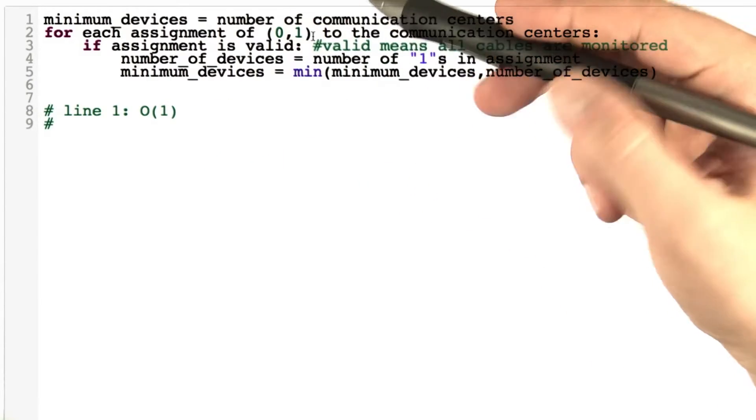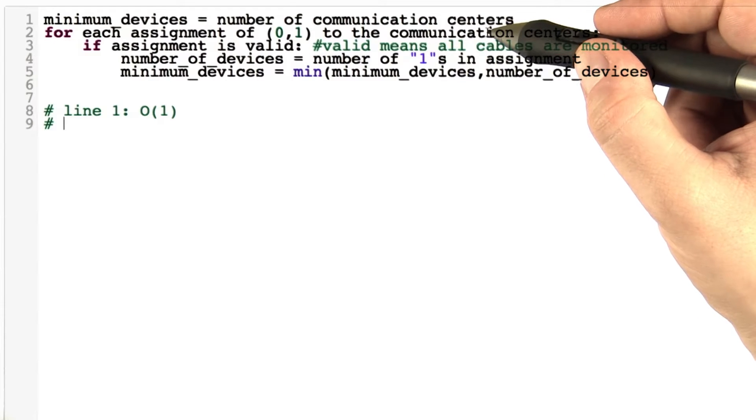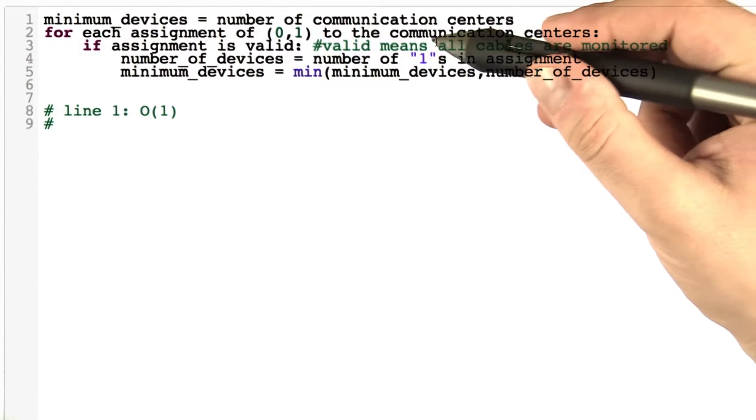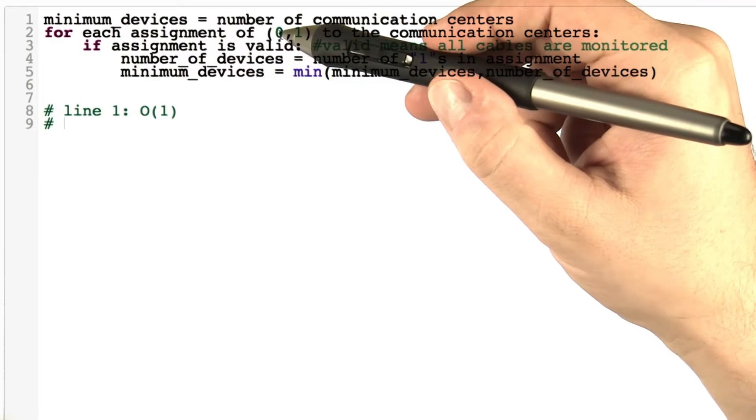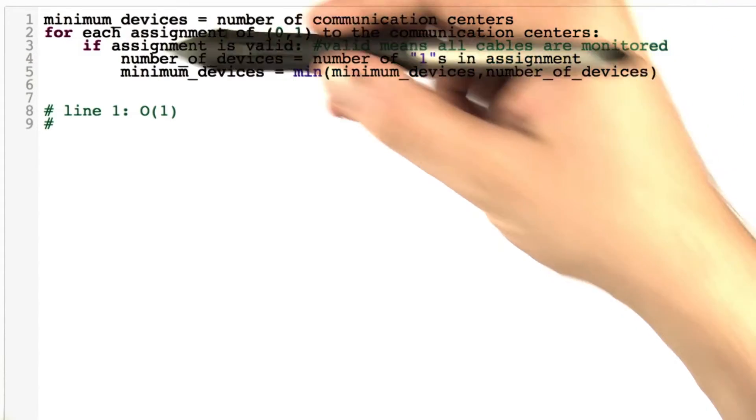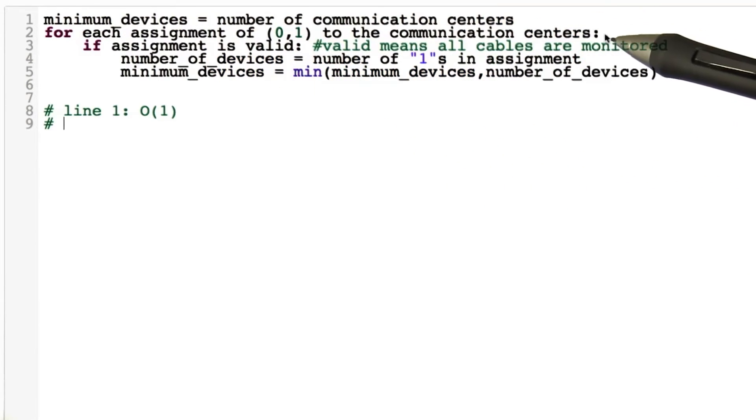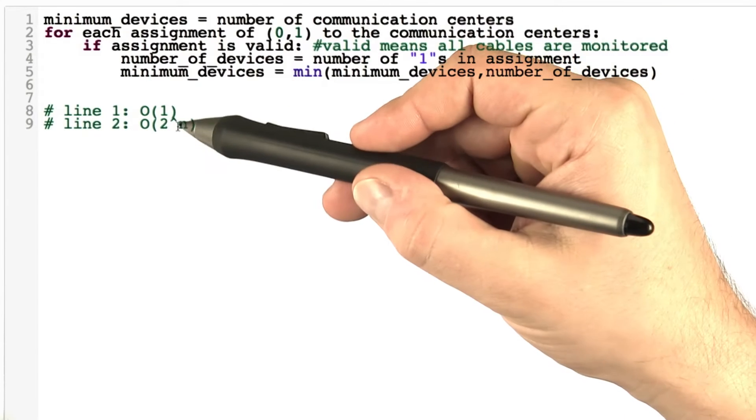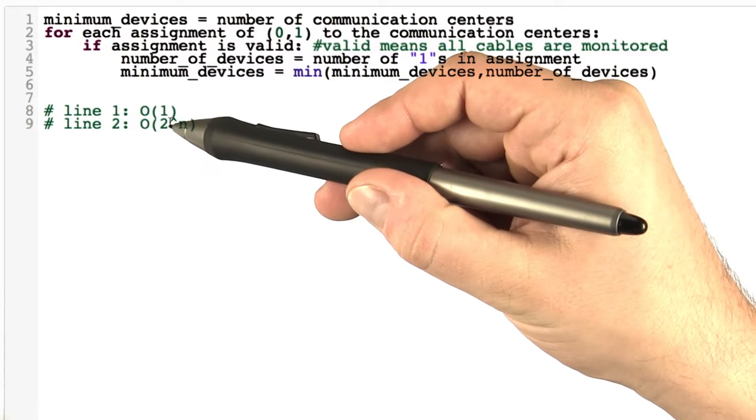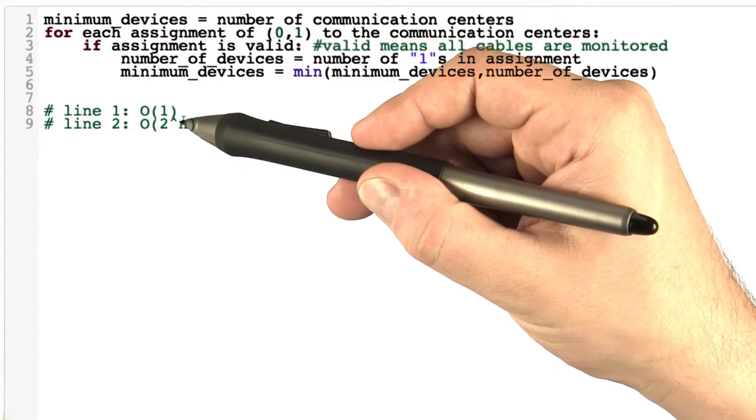Now, line number two. When we have n communication centers, so n is going to be the size of the input in this case, then we already figured out at the beginning that this line here is going to be executed O(2^n) times. And I'm going to use this notation here, which you might not be familiar with, to say that n here is the exponent.